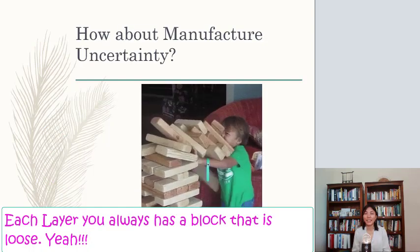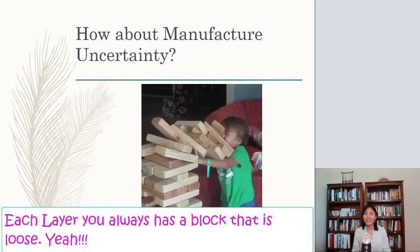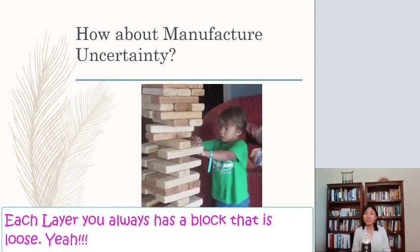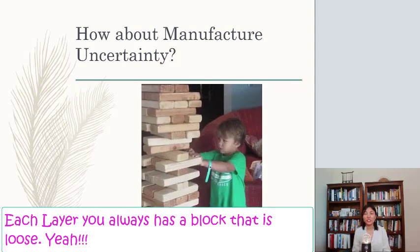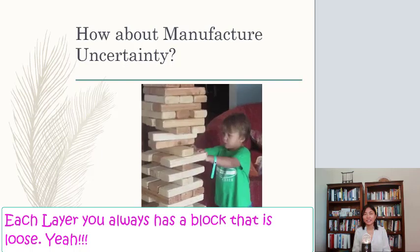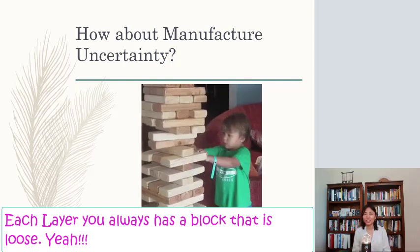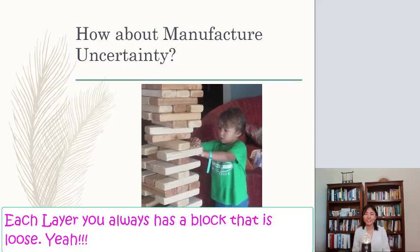Now, how about manufacturer uncertainty? Yeah, there you go. That's my favorite game, Jenga. And if you look at each individual block, even though you use the same machine to manufacture them, they are different. That is the uncertainty due to manufacture. And that's also what I called the beauty of imperfection. Thank you.